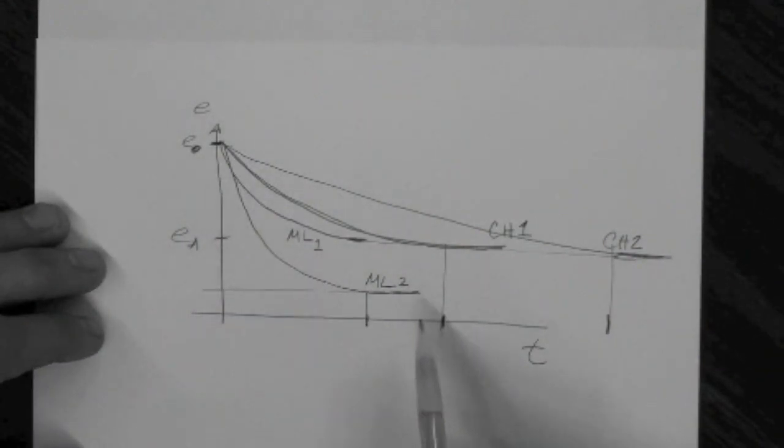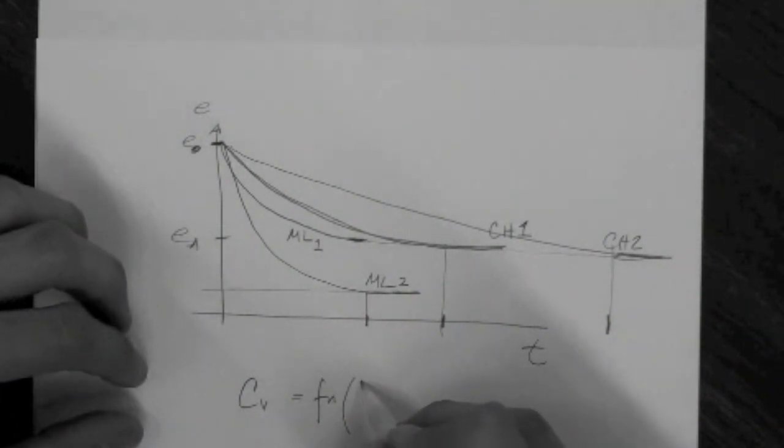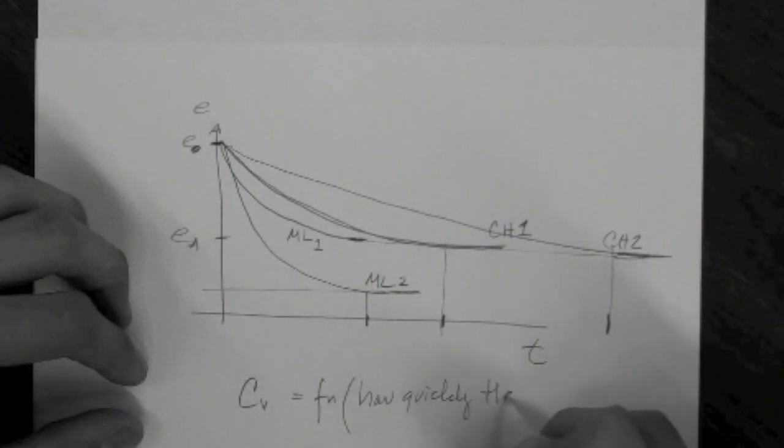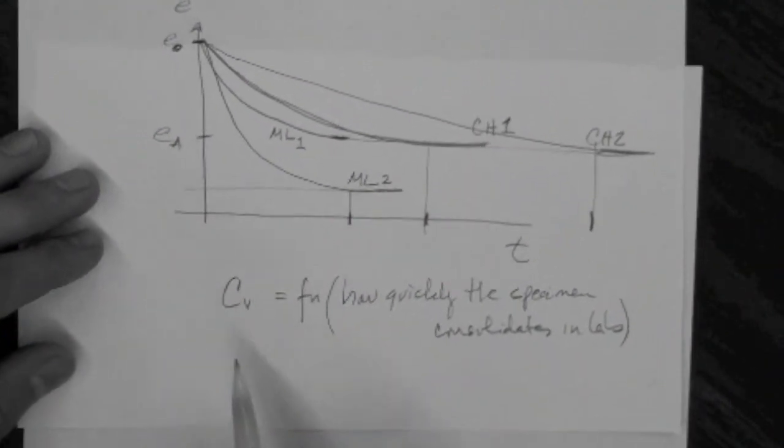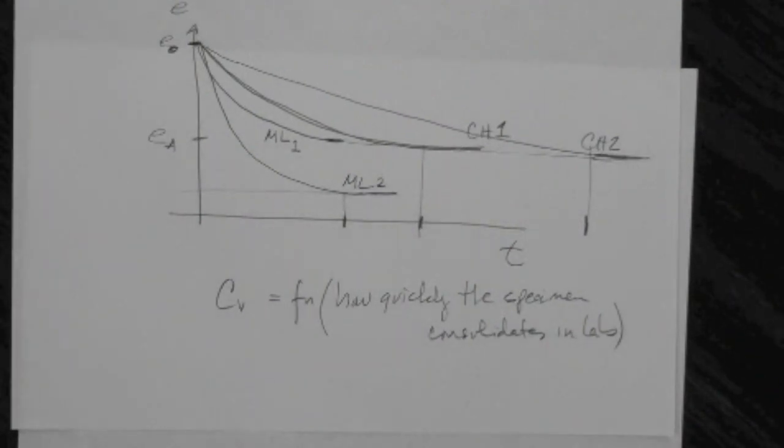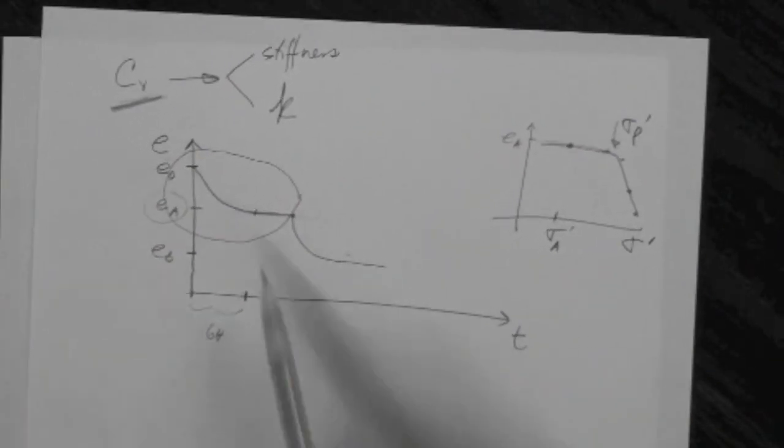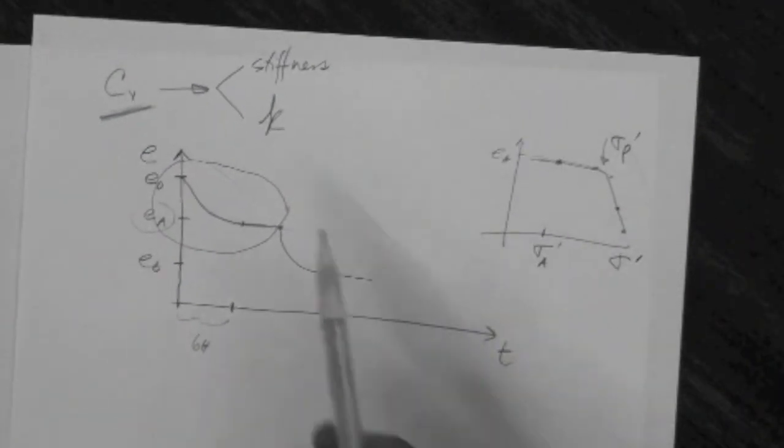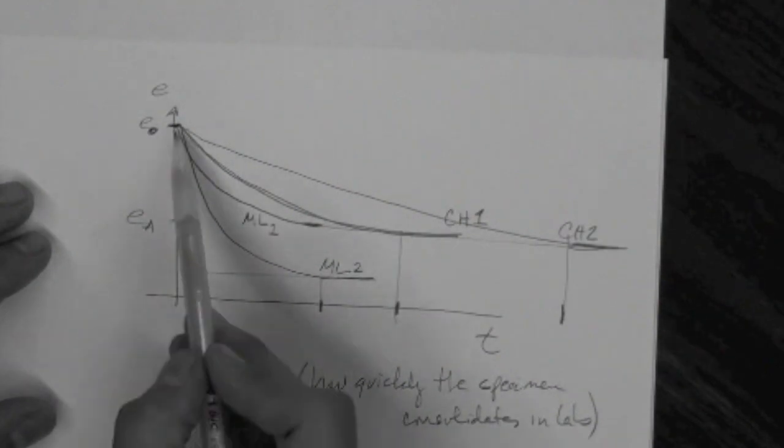With this data, we can get C sub V. So C sub V is a function of how quickly the specimen consolidates in the lab. What specimen? The one that we removed from the soil layer to determine C sub C, to determine C sub R, sigma V prime, and E naught. So this plot that is used to get this plot, this data is also used to get C sub V. This is a sum of that initial raw data for specimens.